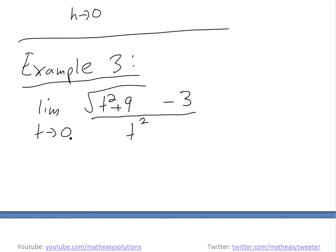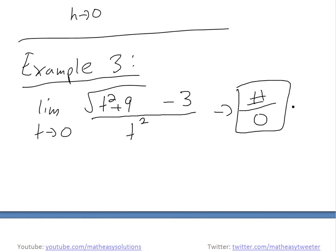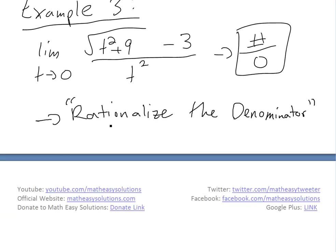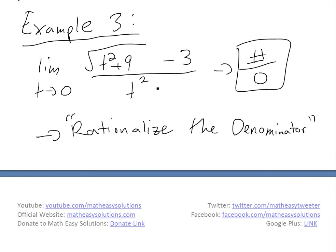Now for the last example today: the limit as t approaches zero of the square root of (t squared plus nine) minus three, all divided by t squared. Again, plugging in zero gives a divide-by-zero, so we can't directly substitute. Instead, we need to rationalize the numerator — I'll do another video on this — basically rearranging so we won't have division by zero.